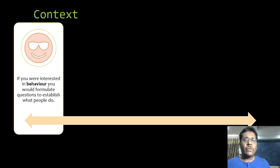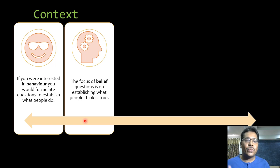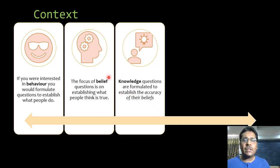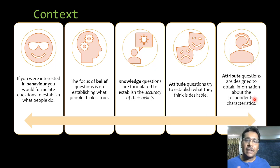While deciding on the survey it is important to understand the context of the questions and what we are trying to find out. Questions can be about behavior — what people do in a particular situation; belief — what people think is true; knowledge — testing the accuracy of what they believe; attitude — what people think is desirable or not; or attribute questions about age, income, time spent on media, and similar things.